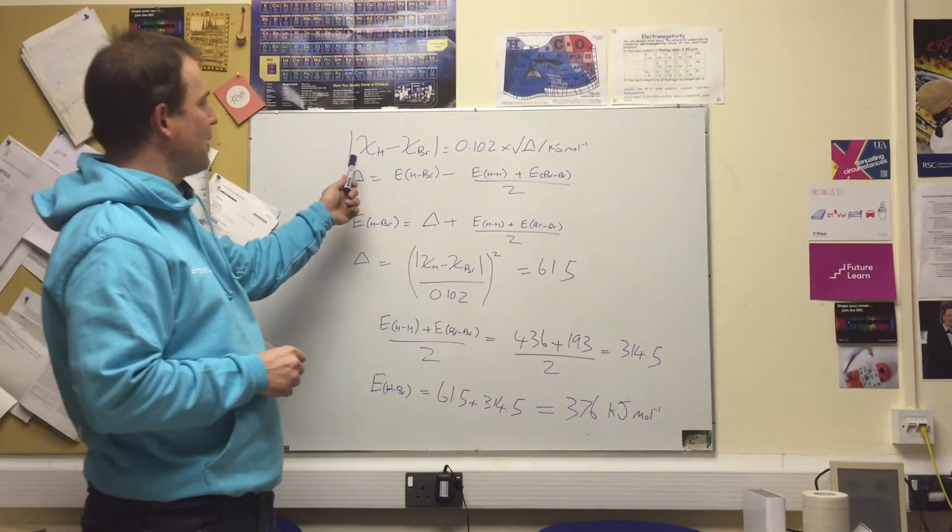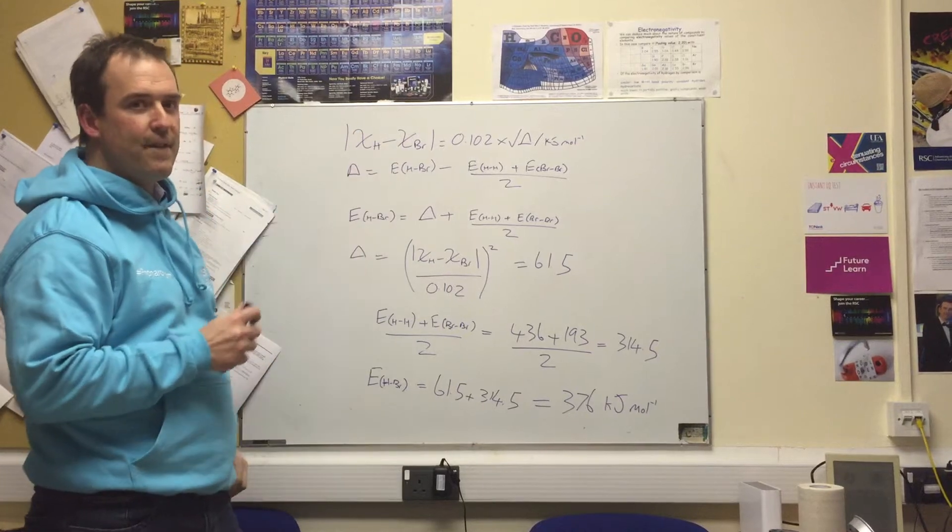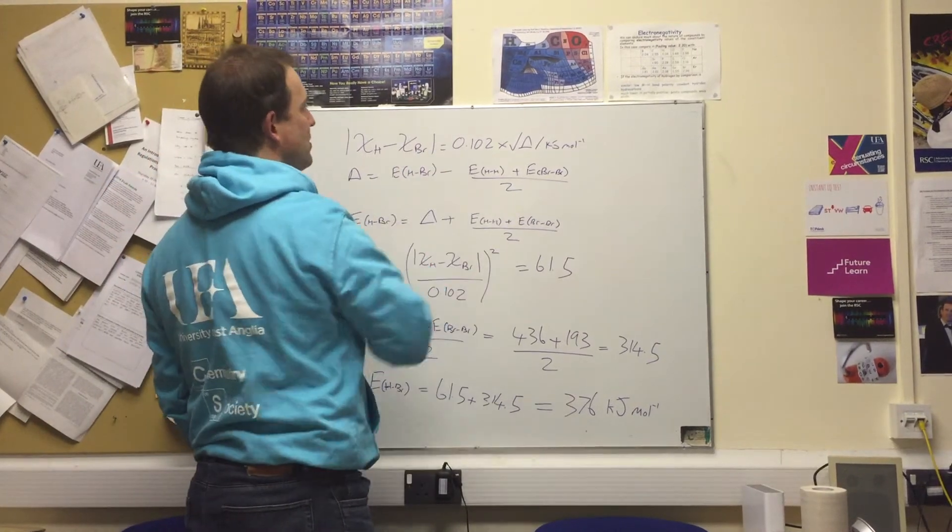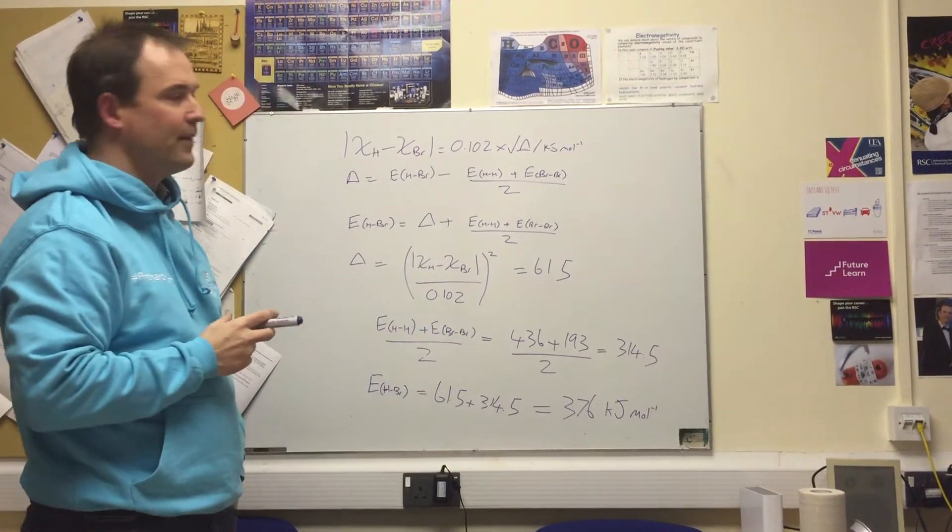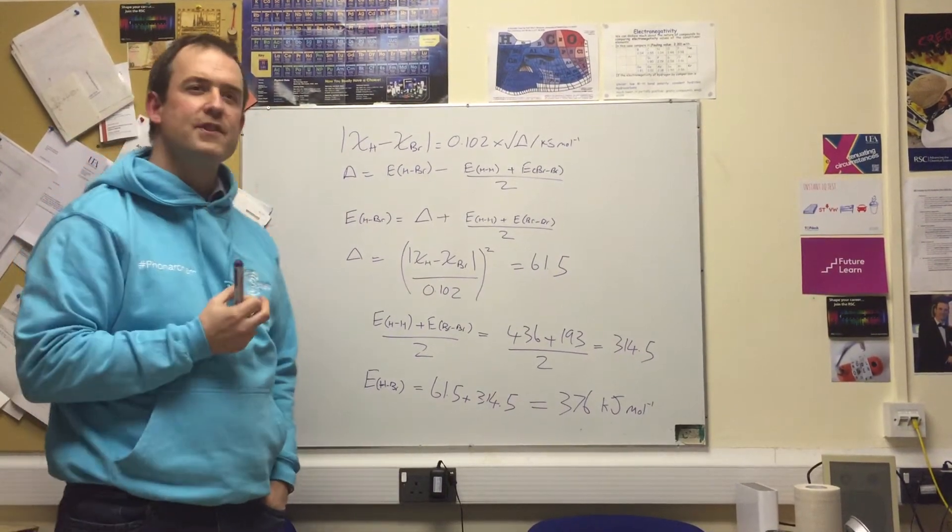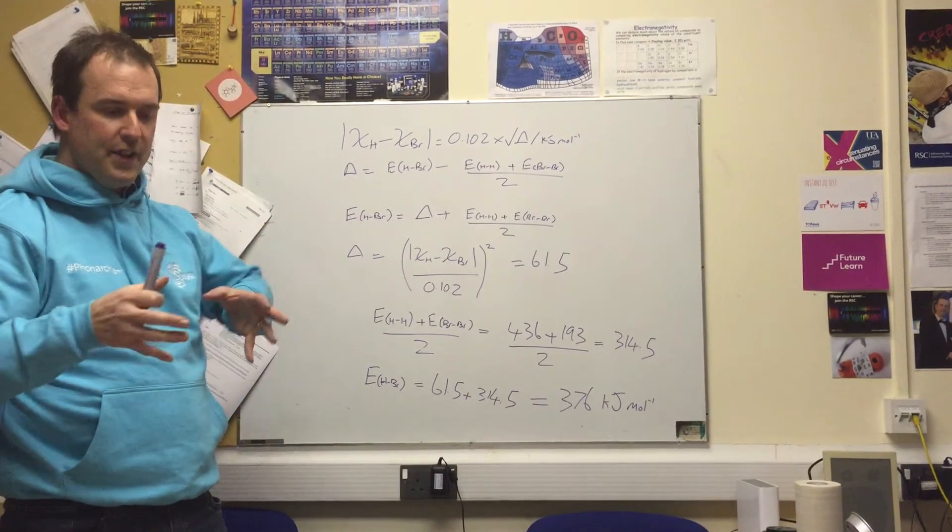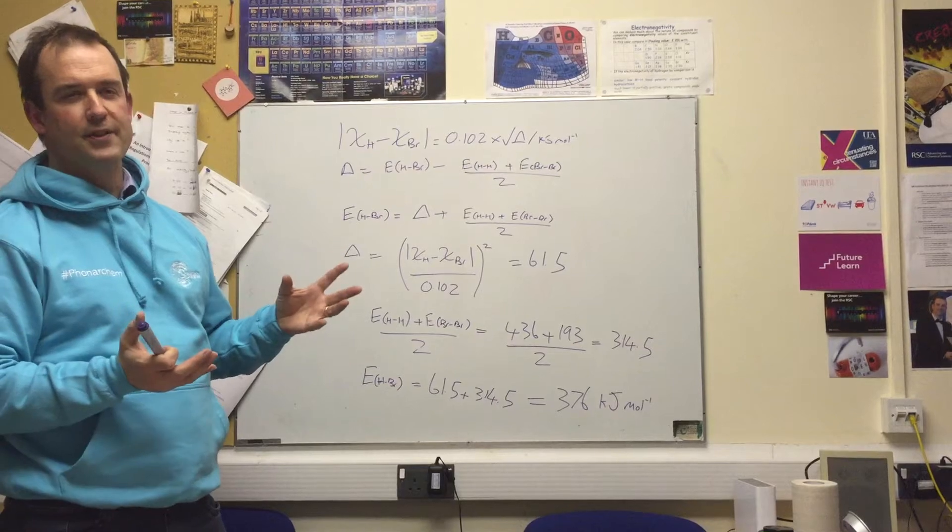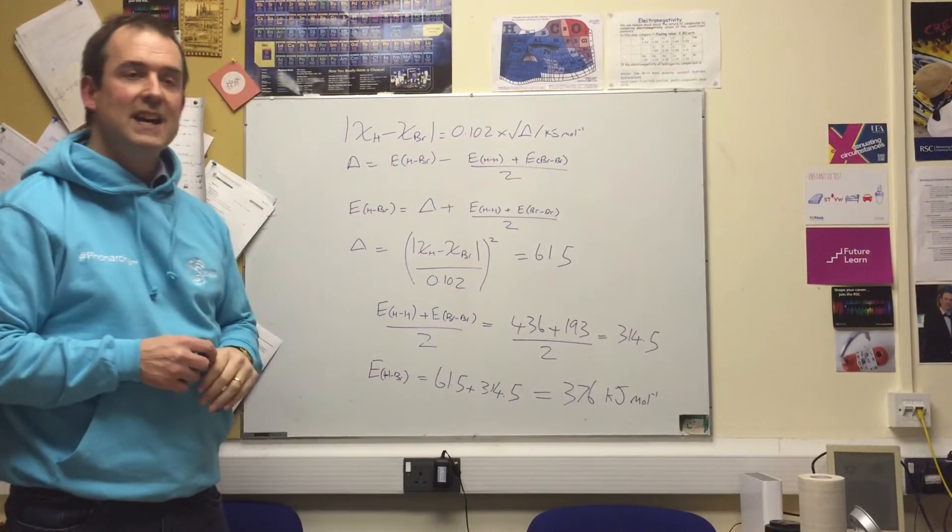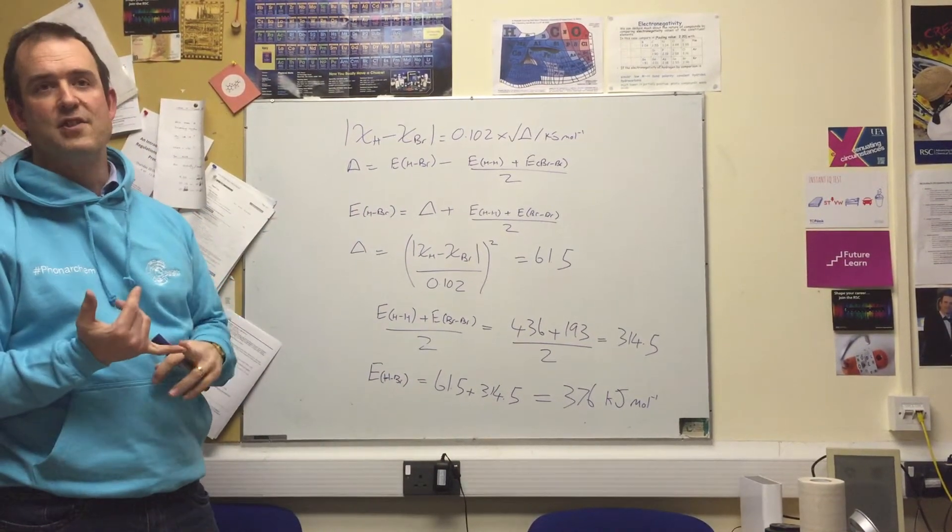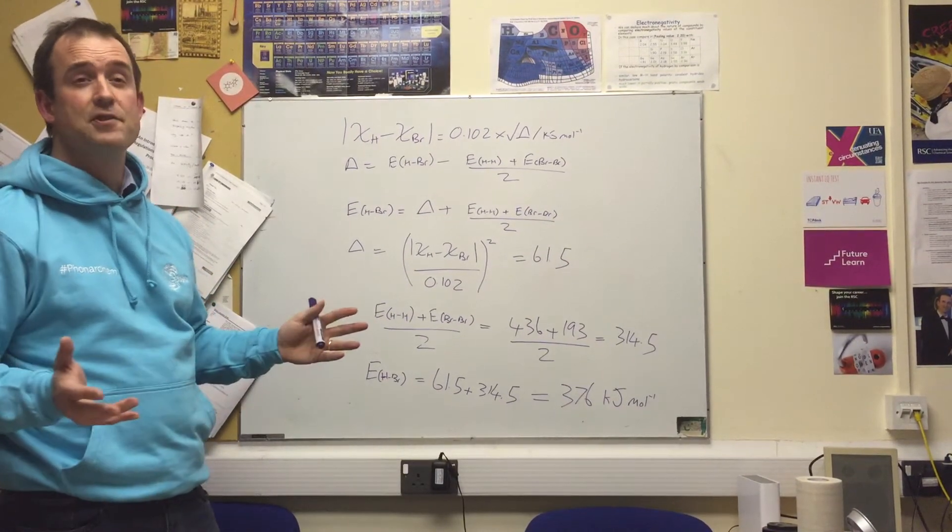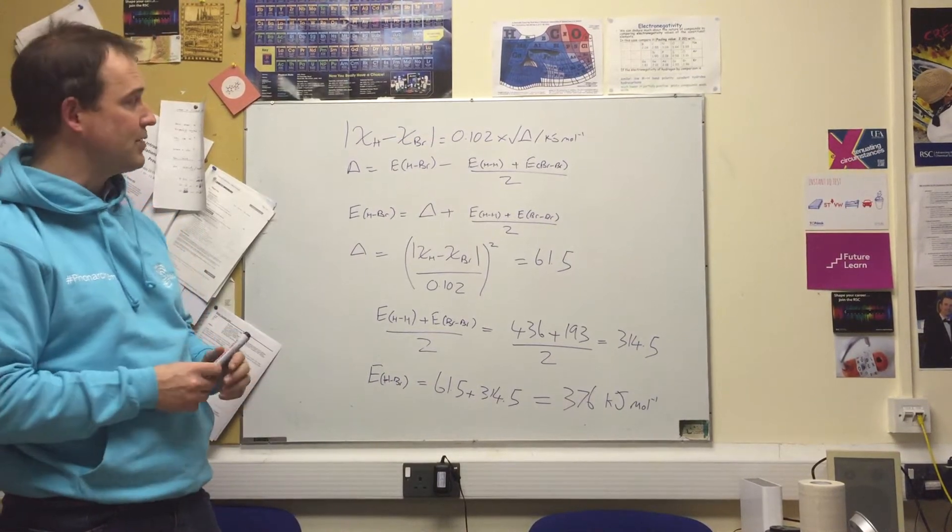We have our expression where the modulus of the difference in electronegativities between the two atoms is equal to 0.102 times the square root of the value delta that we're interested in. This is the bit that relates the differences in electronegativity to the additional ionic contribution of the bond dissociation energy. The reason for this constant is that we need to translate between electron volts, which are the units that Pauling was familiar with, and kilojoules per mole, which is the units that we use to describe bond dissociation energies.